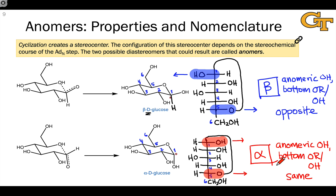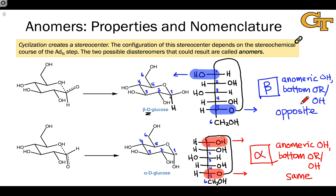To summarize: the alpha anomer is characterized by the anomeric hydroxyl and the alkoxy or hydroxyl group connected to the bottommost stereocenter pointing in the same direction, and the beta anomer is characterized by the anomeric hydroxyl and the bottommost alkoxy or hydroxyl oxygen pointing in opposite directions in the Fischer projections.